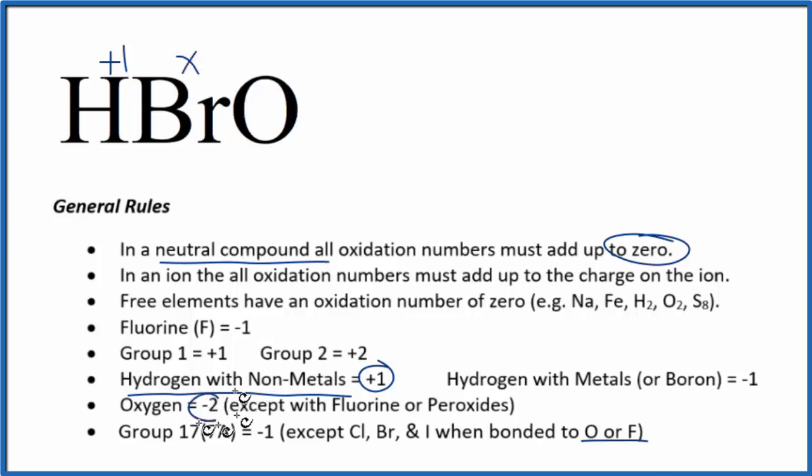Oxygen, that's going to be minus two. So all of this adds up to zero. We can just set up an equation: one plus X minus two equals zero. So X, this is minus one equals zero, and then X will equal a positive one.